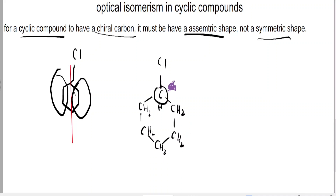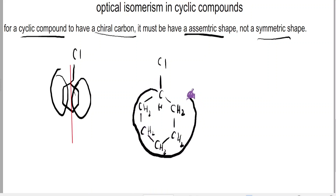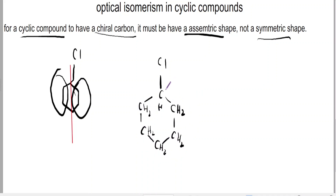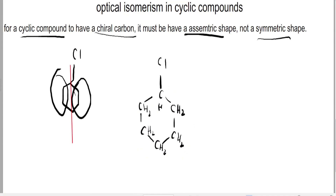The only possibility is this carbon right here. But this carbon is bonded to a hydrogen and chlorine. Now, what are the other two bonds? The other bond going anti-clockwise is CH2, CH2, CH2, CH2, CH2, and CH2. And then the last bond going clockwise is CH2, CH2, CH2, CH2, CH2. You find that both sides are equally the same, so these two bonds are similar, and thus this carbon cannot be chiral.